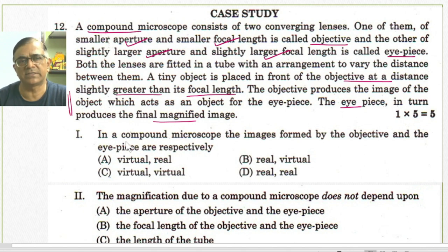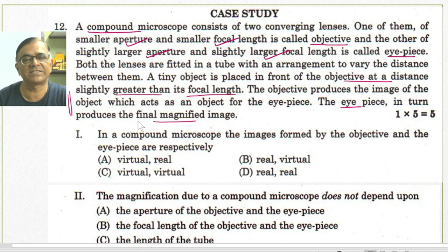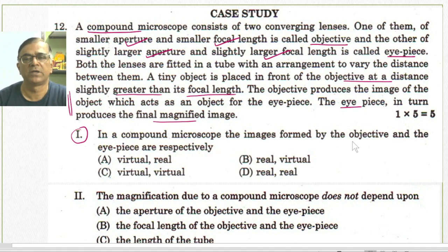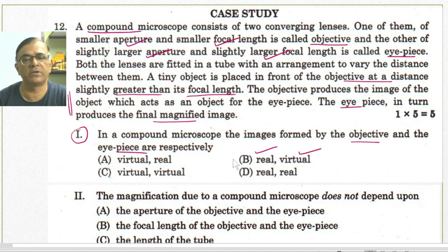We are already aware of the two different cases in compound microscope. In the first case, the final image is formed at the least distance of distinguishing, and in the second case, the final image is formed at infinity. For the first part of this question — the images formed by the objective and the eyepiece respectively — the objective produces a real image and the eyepiece produces a virtual image. So the answer is option B.